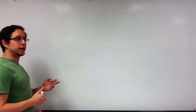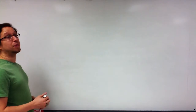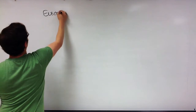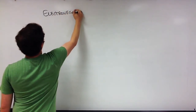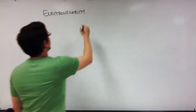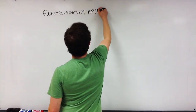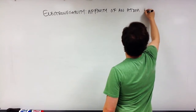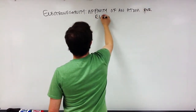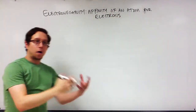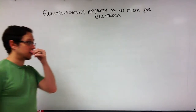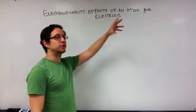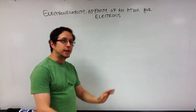In this video I'm going to talk about electronegativity and how it can affect the type of bond that forms between two different types of atoms. Electronegativity is the affinity of an atom for electrons — essentially, how hard that atom pulls on electrons. If you have a really high electronegativity, that atom has a strong pull; if it has a low electronegativity, it has a weaker pull.